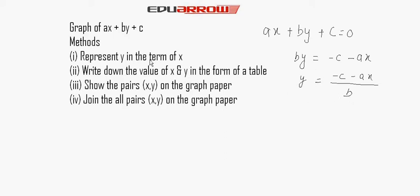Write down the values of x and y in the form of a table. The second step is to take some values of x for which we get the corresponding values of y. Show the pairs (x,y) on the graph paper and join all the pairs on the graph paper.